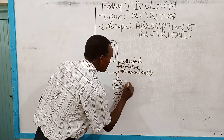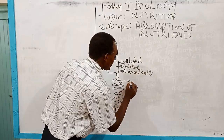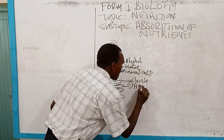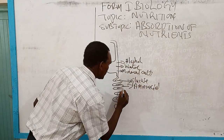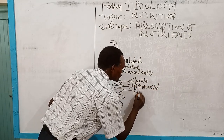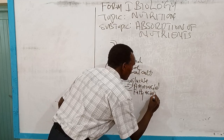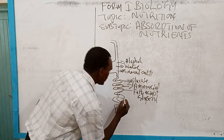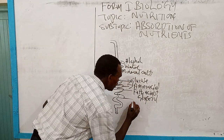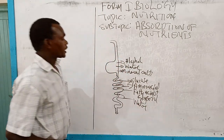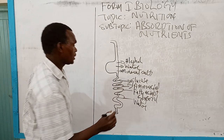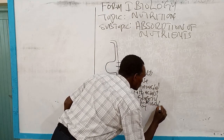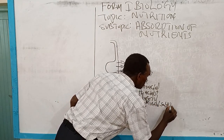When we come to the ileum area, we have glucose, we have amino acids, we have fatty acids plus glycerol, water, and also the remaining mineral salts and vitamins.